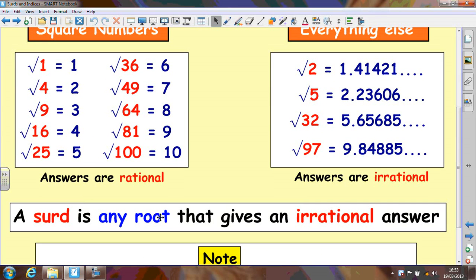Basically a surd is any root that gives an irrational answer. None of these examples here give an irrational answer, so these are not surds because they square root. These ones are however, because when you square root them they give a big long decimal answer that you would have to round.